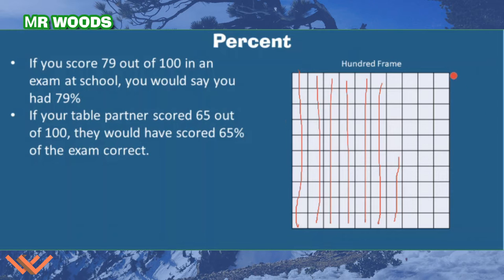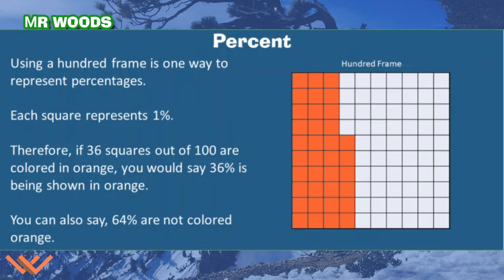Now, if we look at it the other way, 30 plus 5 more means 35% was missed. So 65% plus 35% is equal to 100%.